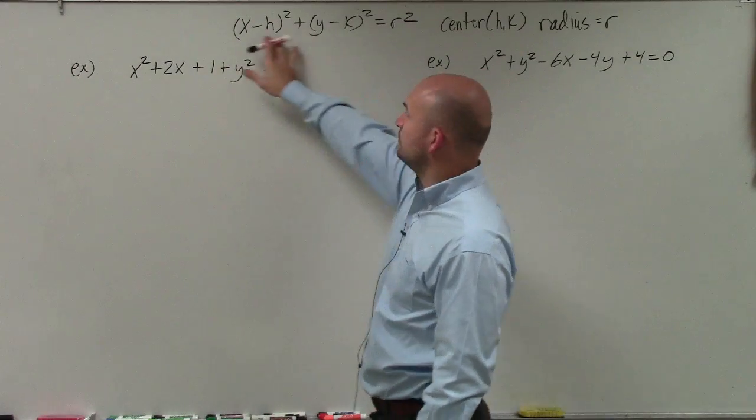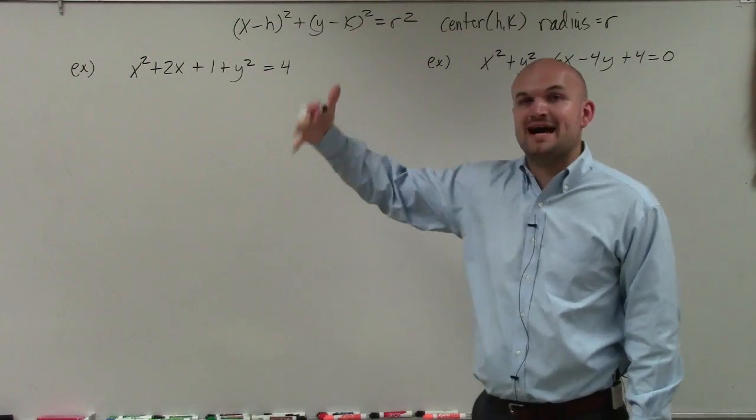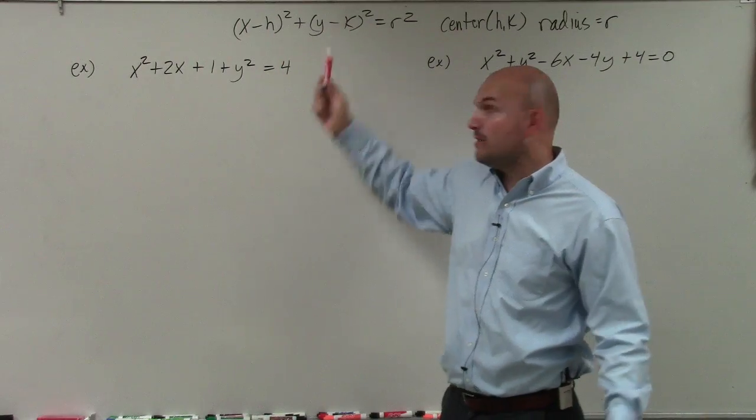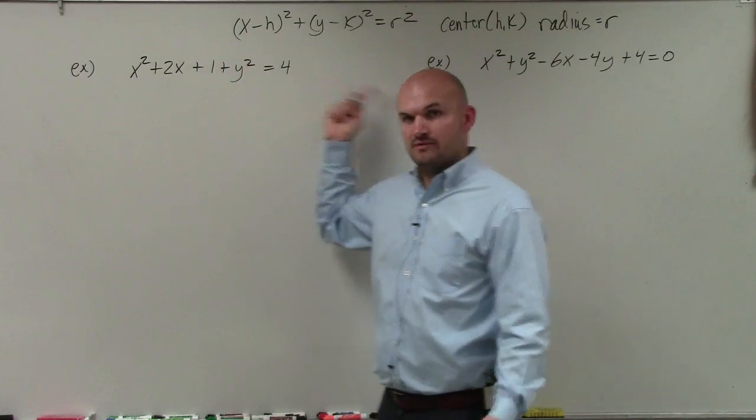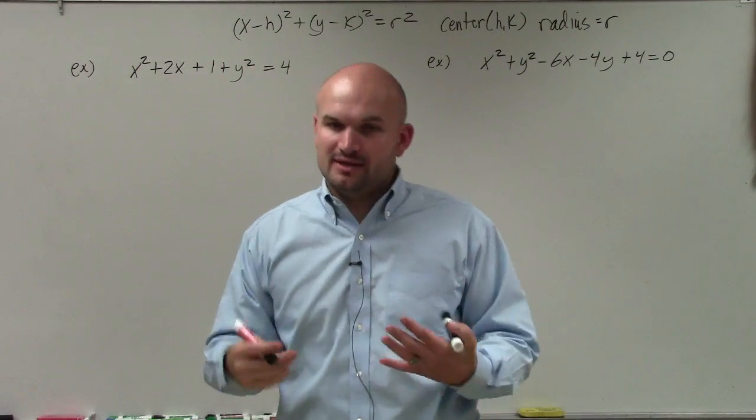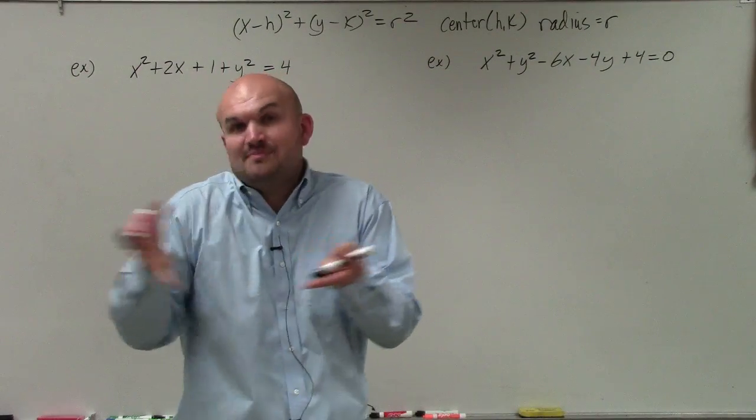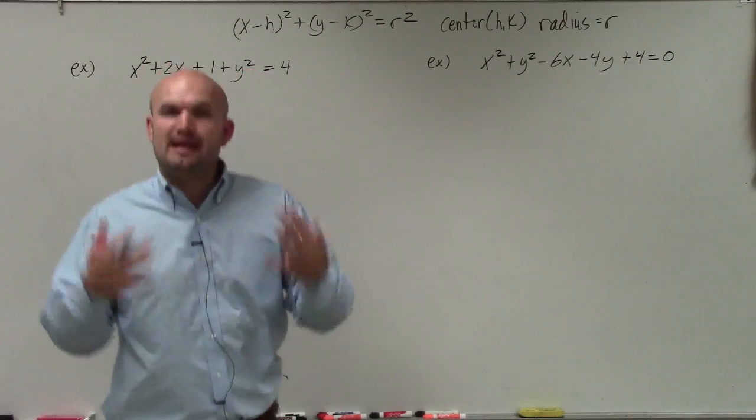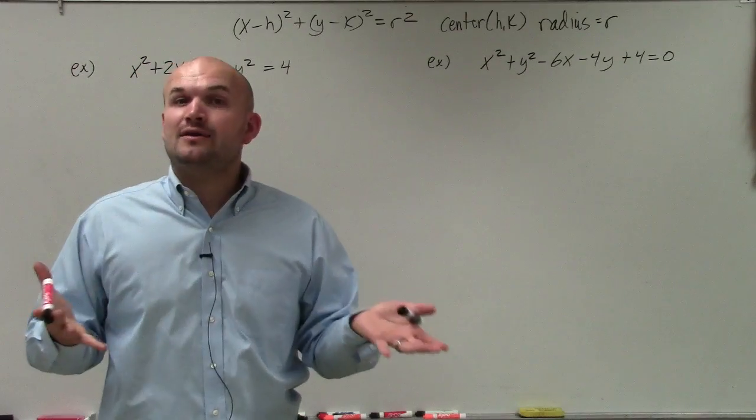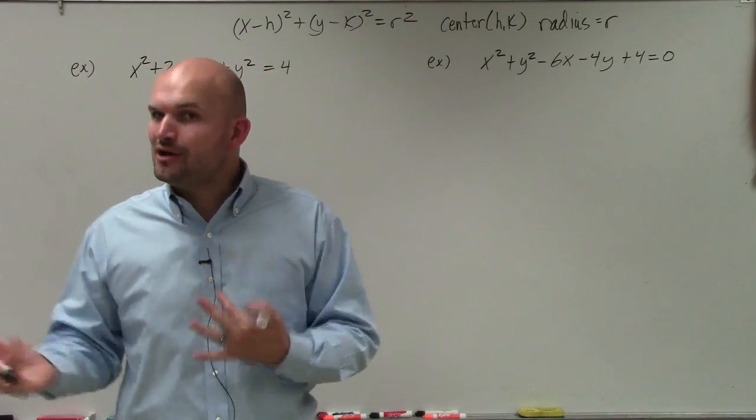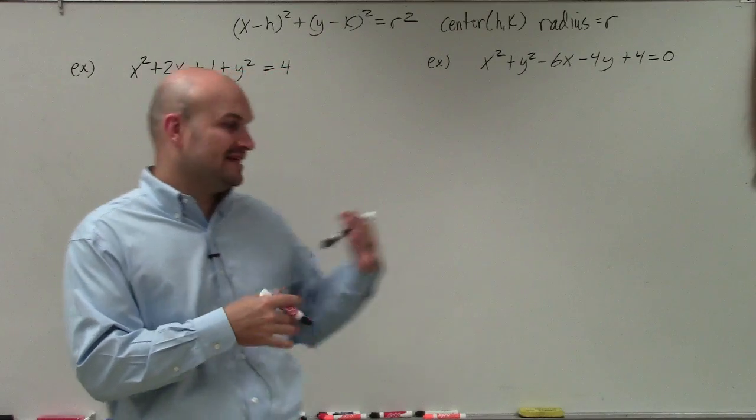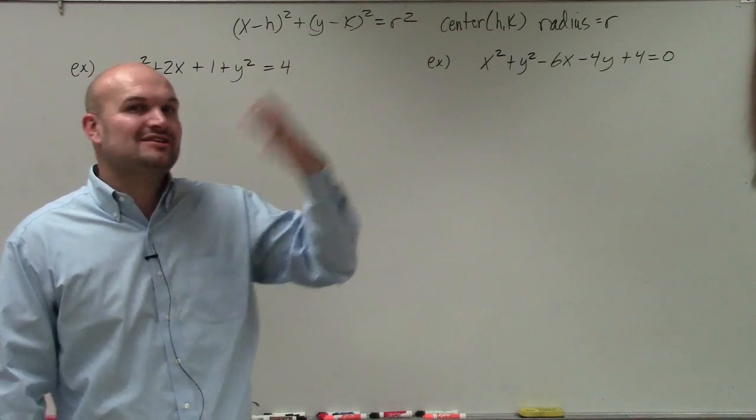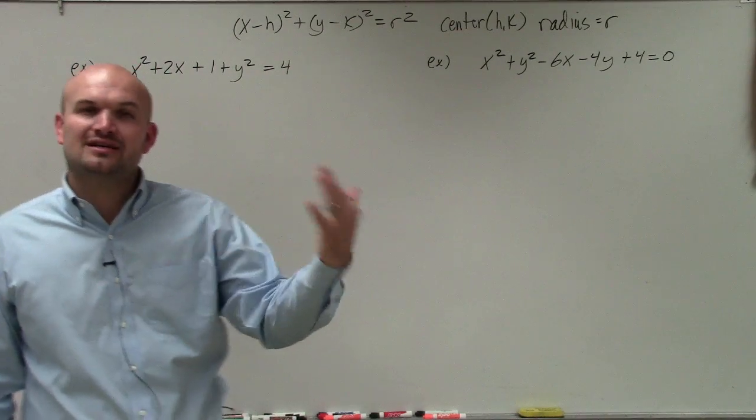One important thing about this equation of a circle is that we have binomial squared: x minus h squared, y minus k squared. Whereas these, we just have x squared and y squared. We don't have a binomial squared in parentheses, x minus something, y minus something, and then that squared. So that's what we want to create. We need to create a binomial squared. To do that, we need to create a perfect square trinomial. The process of taking an equation and creating a perfect square trinomial that can be factored down to a binomial squared is called completing the square.